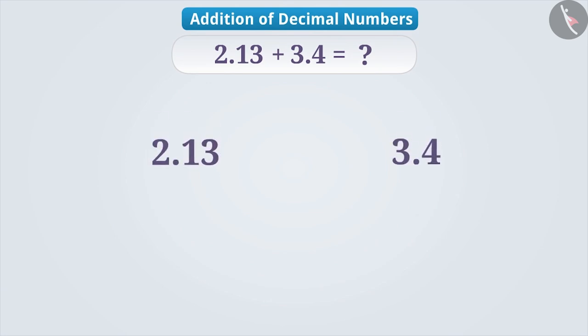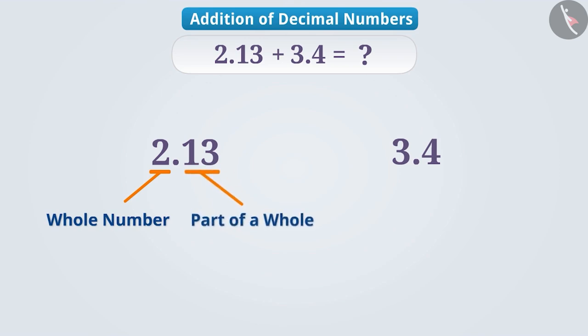You must be knowing that in any decimal number, the whole number is to the left side of the decimal point and part of a whole is written to the right side of the decimal point. In 2.13, 2 is a whole number and 13 is hundredths.